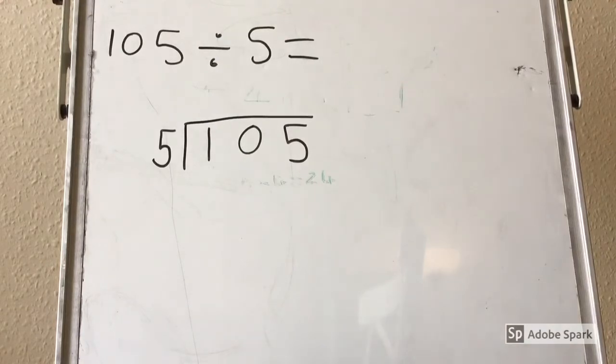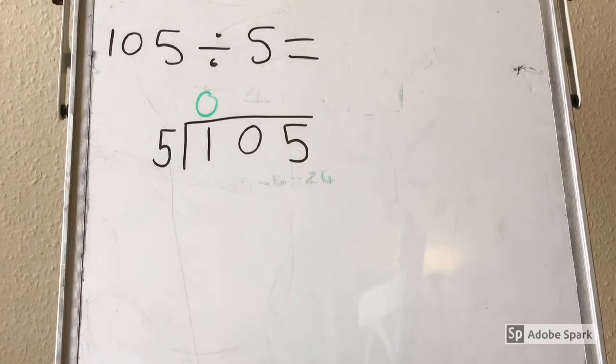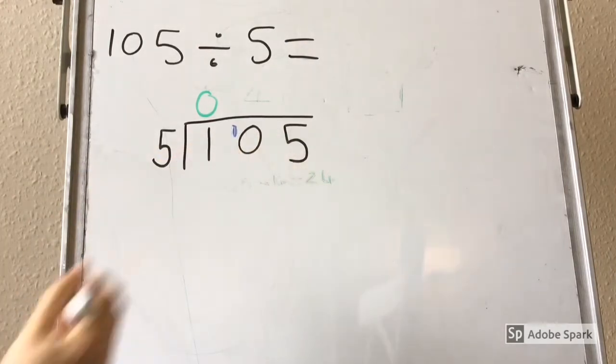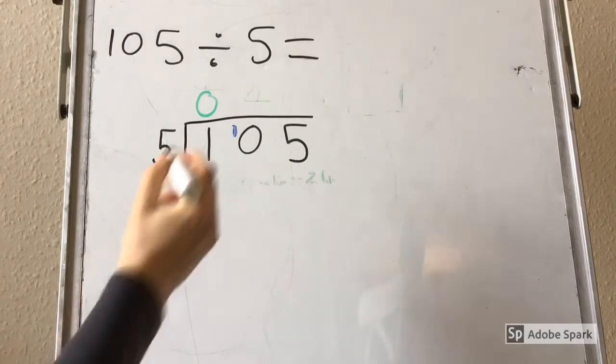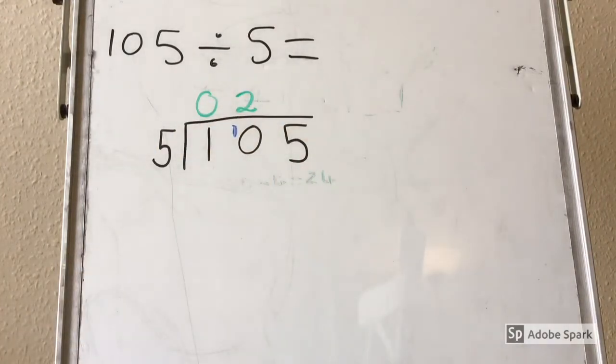Here I am using my bus stop to divide 105 by 5, so I will start by thinking how many 5's go into 1. No 5's go into 1, so I carry this 1 across. Now I think how many 5's go into 10. I know that 2 lots of 5 is 10, and there is none left over.